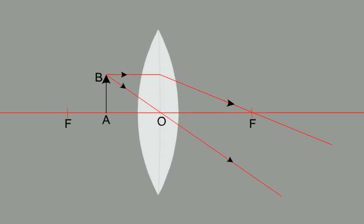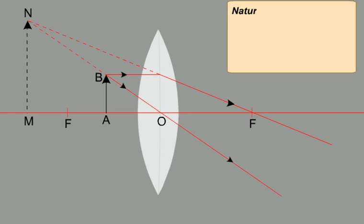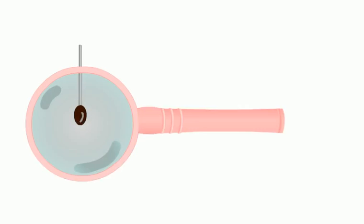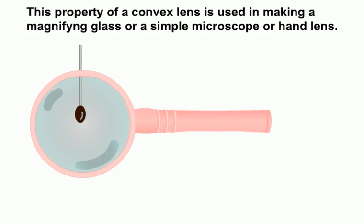Here, both the rays do not meet each other. Let us produce the rays back with dotted lines. In doing so, the rays meet at a point, and the image will be formed on the same side as shown in the figure. The image will be virtual — that is, it cannot be obtained on the screen — and it would be erect and magnified. Thus, the image formed by a convex lens is virtual and erect only when the object lies between the focus and the lens. This property of a convex lens is used in making a magnifying glass, a simple microscope, or a hand lens.